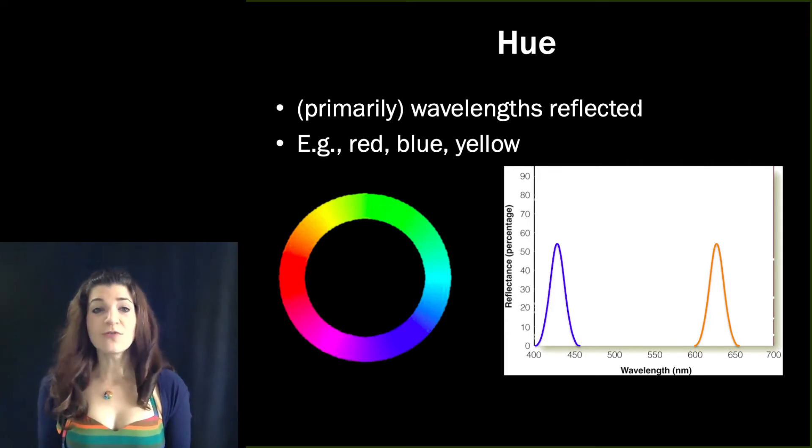So as you move around this colorful wheel, what is changing as you go from location to location is hue. So the way that a bright orange and bright blue differ from one another is hue.